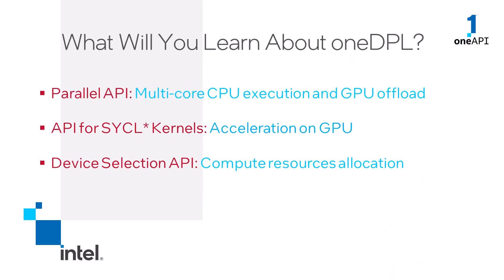I will talk about the major component APIs of oneDPL: the Parallel API for parallel programming with C++ STL-styled code, the SYCL Kernels API to accelerate C++ STL-styled code on GPUs, and the Device Selection API to control how SYCL Kernels are scheduled to the available compute resources.